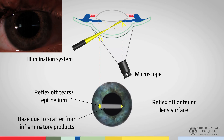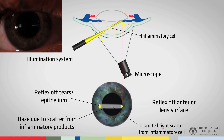If in addition to this we have any inflammatory cells, there will be a discrete area of scatter as well, much brighter than the haze generated by smaller inflammatory products. This will be due to scatter from an individual inflammatory cell. We are looking to ensure that there isn't any scatter in the space between the corneal and lens conic sections, which tells us that the optical space is absolutely clear due to absence of inflammation.